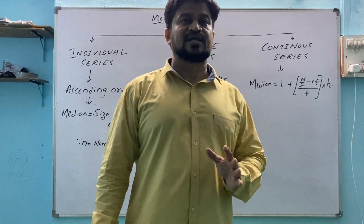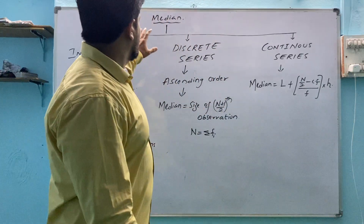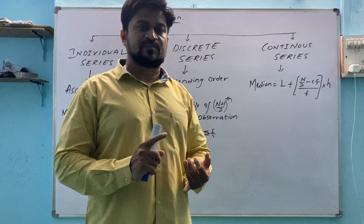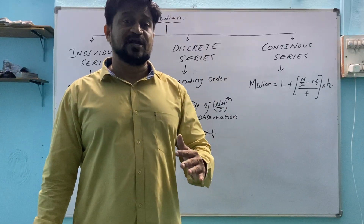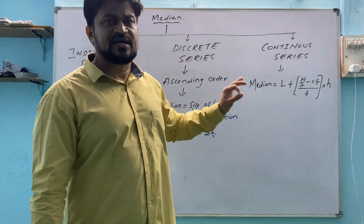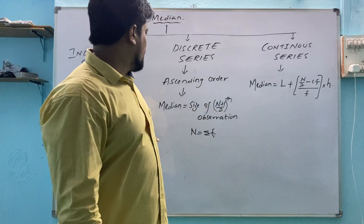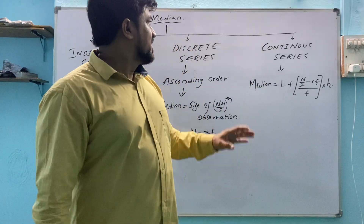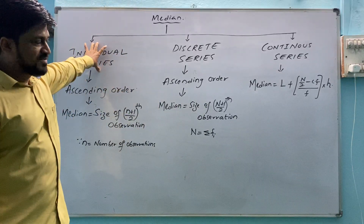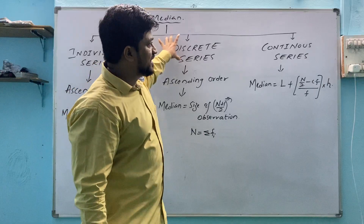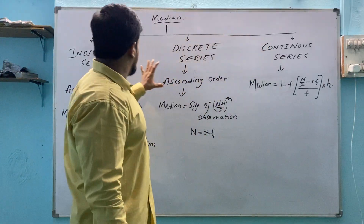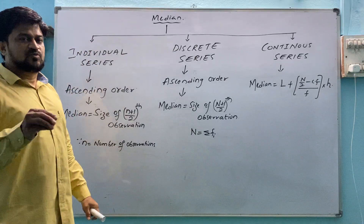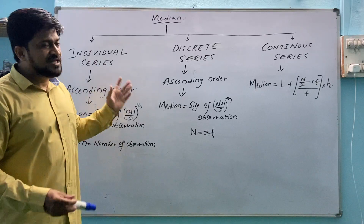The second topic of central tendency is median. If you are good at median, you can solve quartiles — lower quartile, upper quartile, and percentile — because the next three topics are related to median; just the formula will be different. In median, we have the same three types: individual series, discrete series, and continuous series.